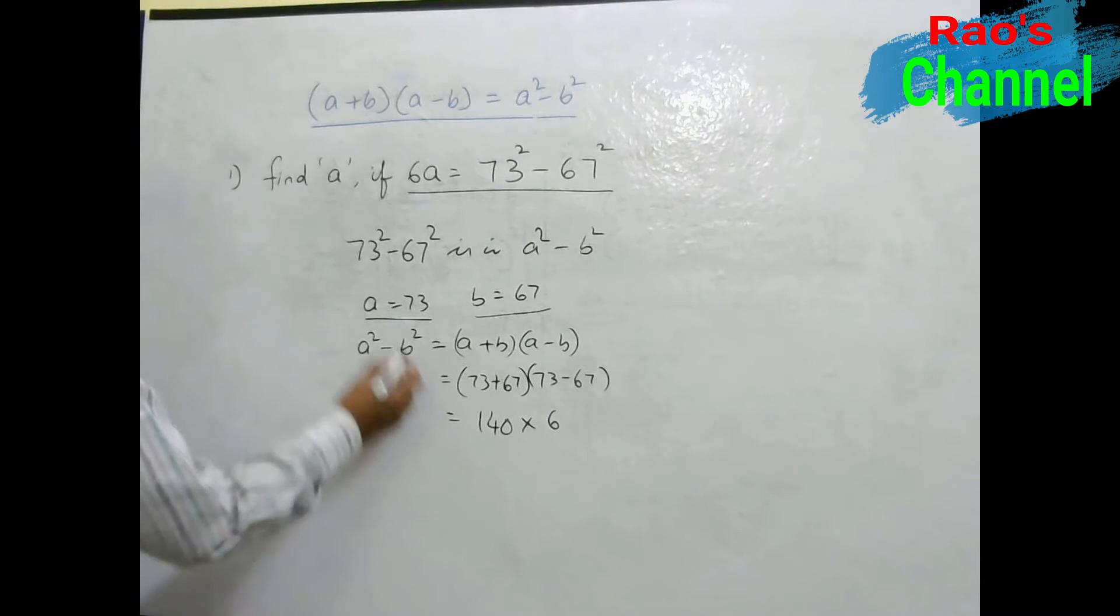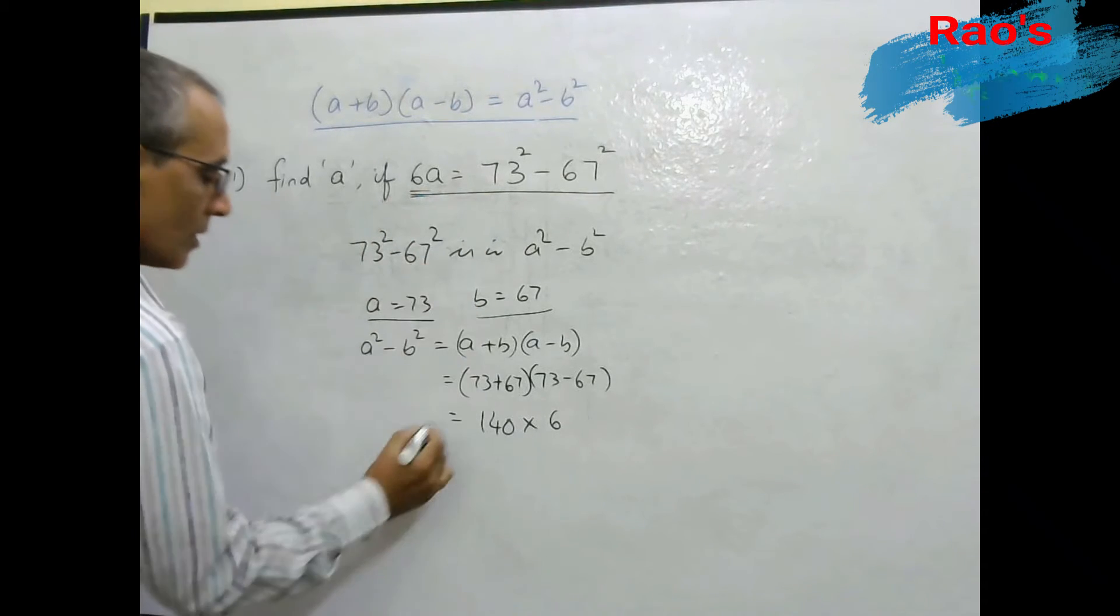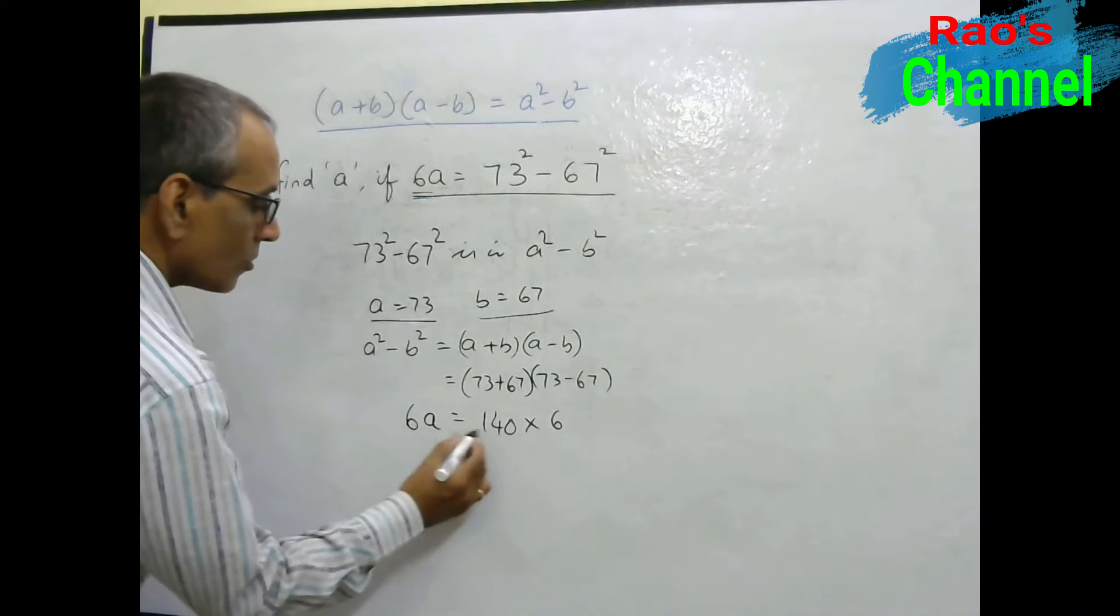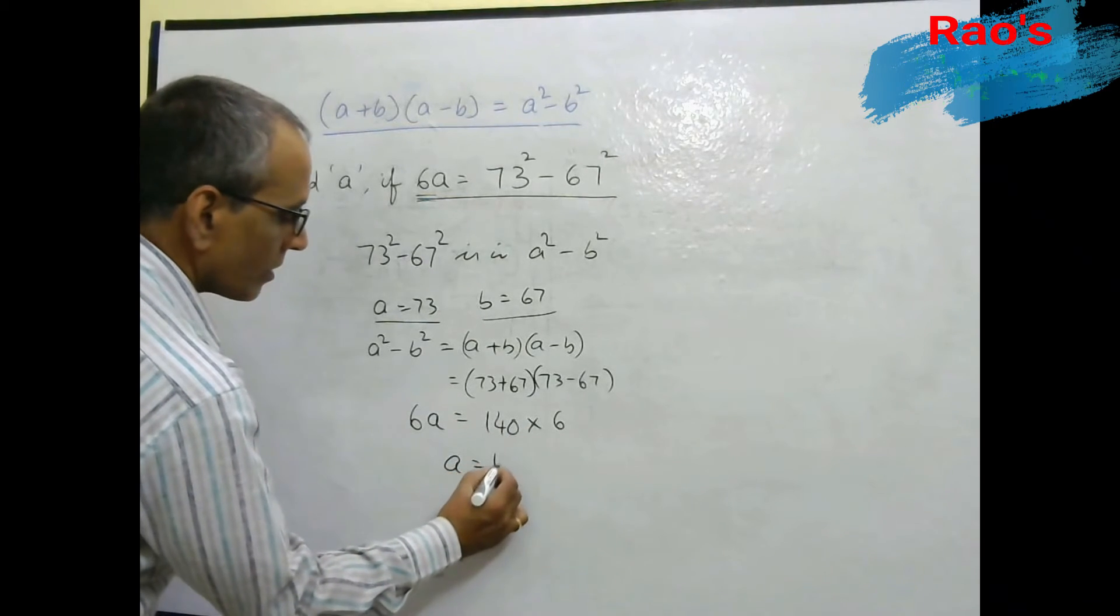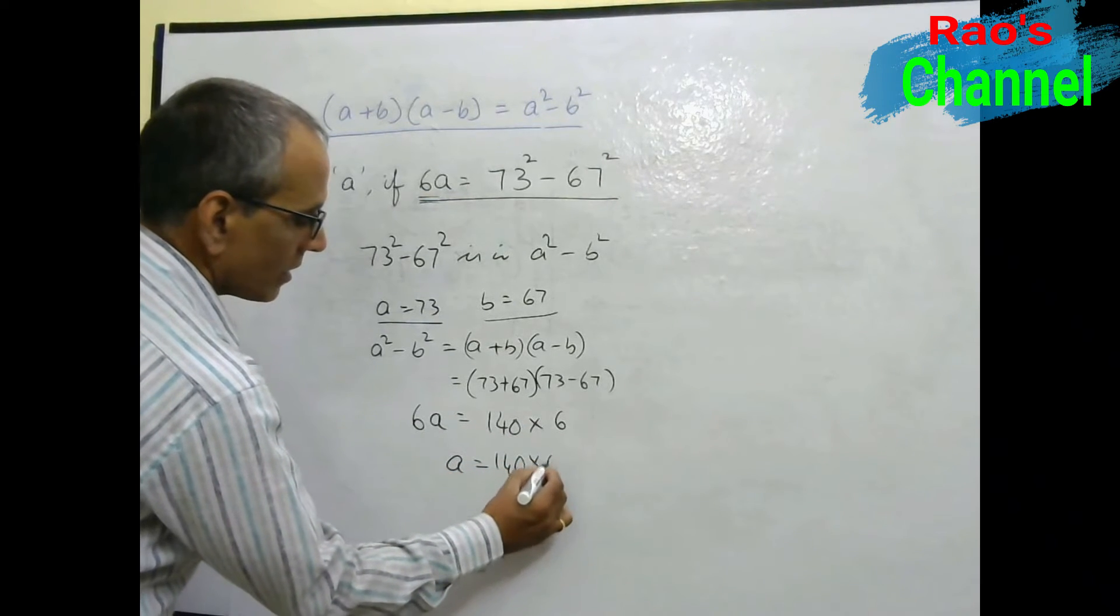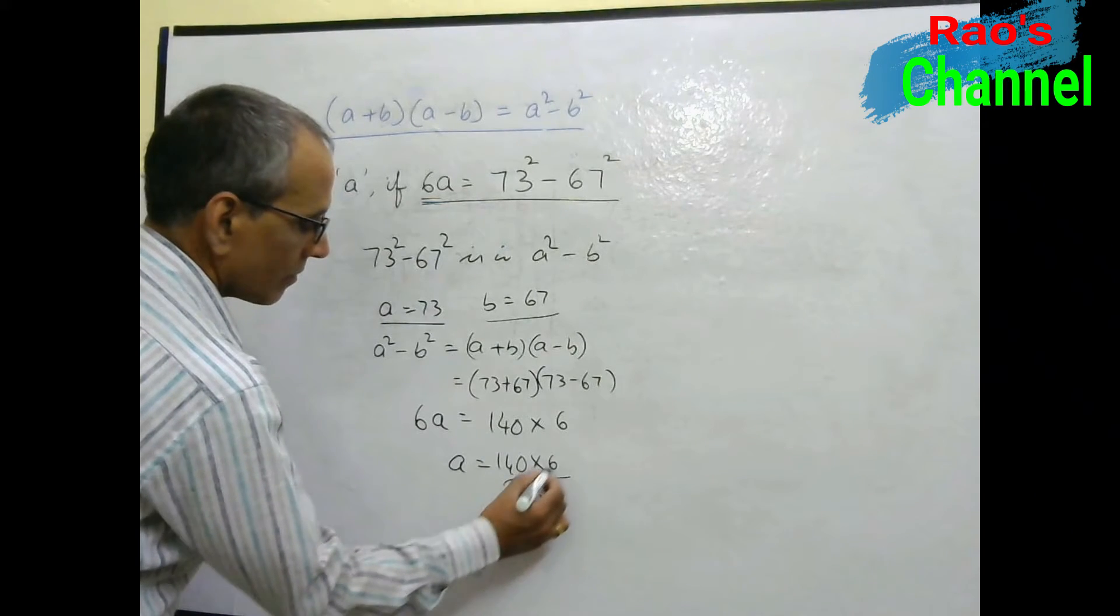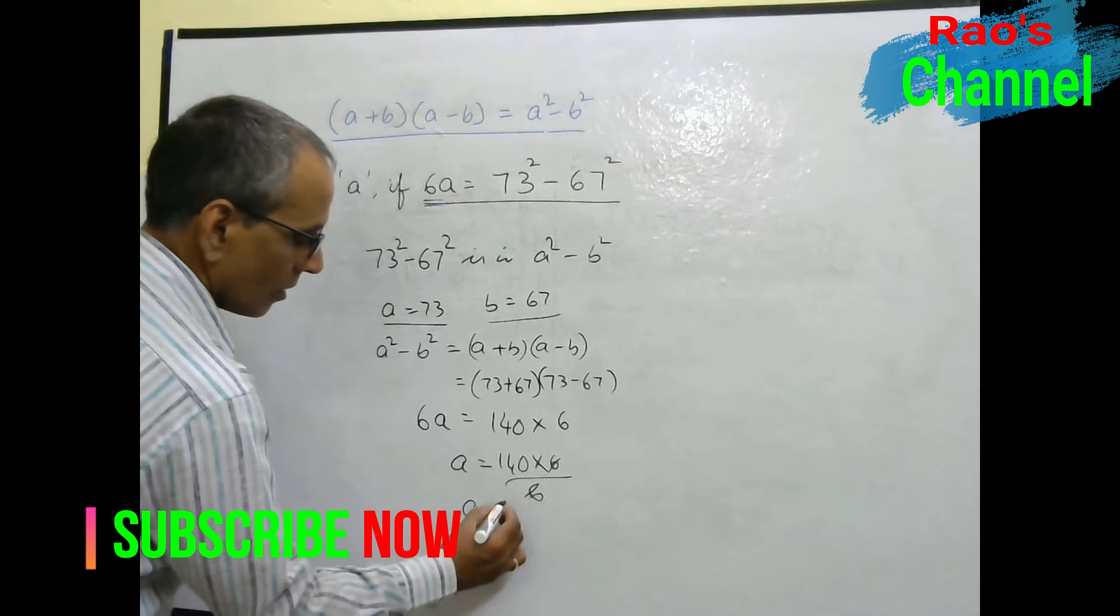So this is 6A. Therefore 6A is equal to 140 into 6, then A is equal to 140 into 6 by 6, that is 140. A is equal to 140.